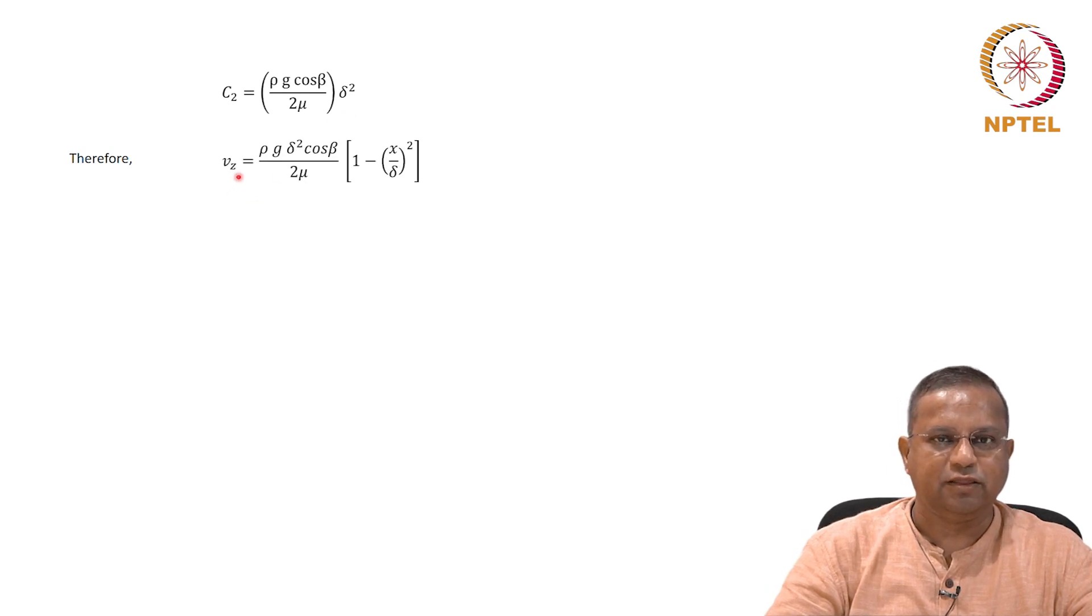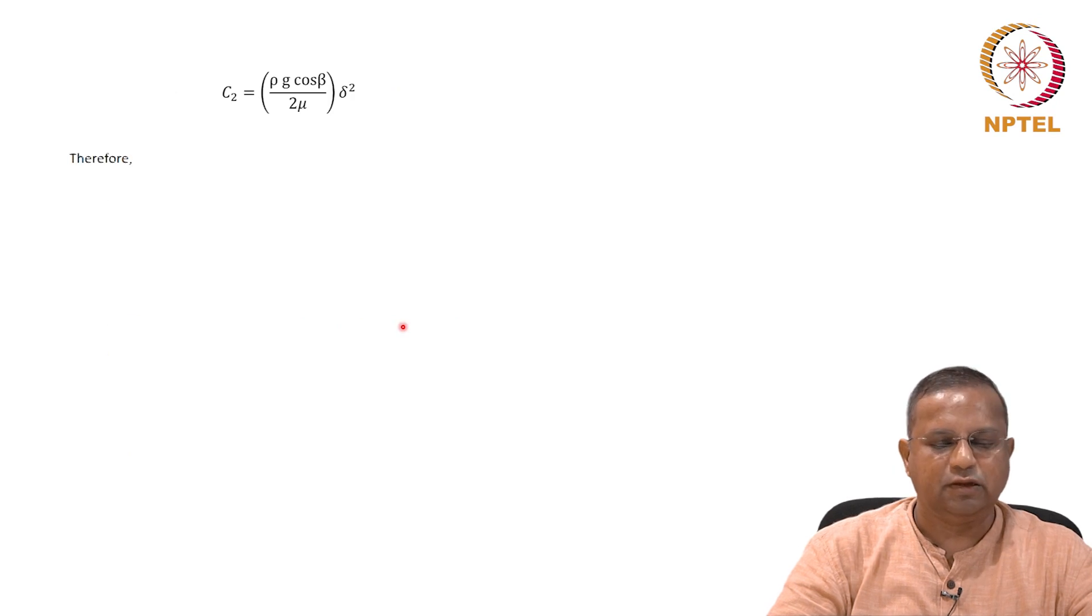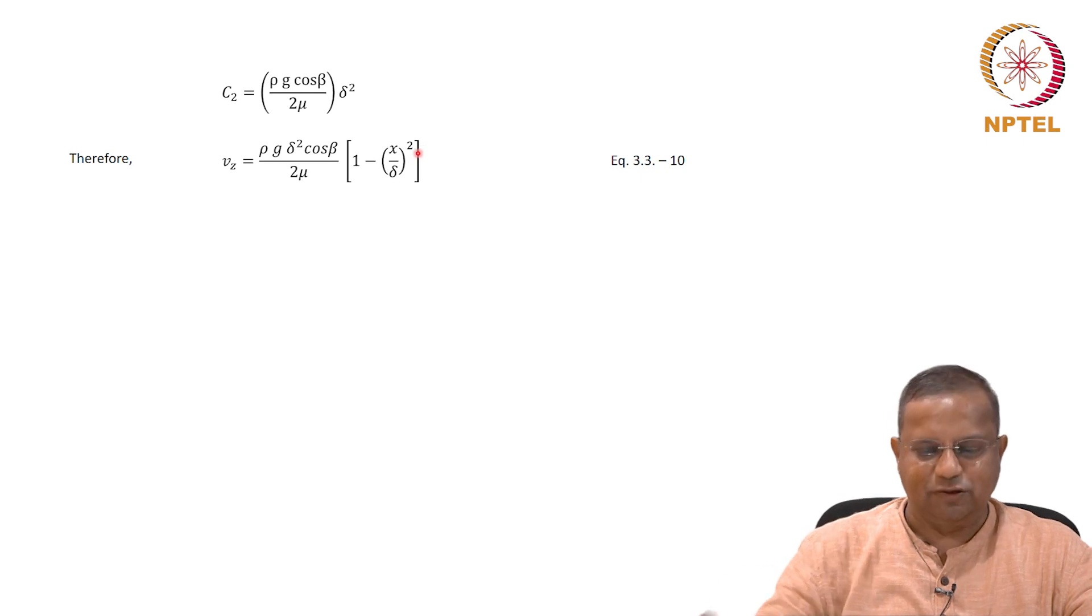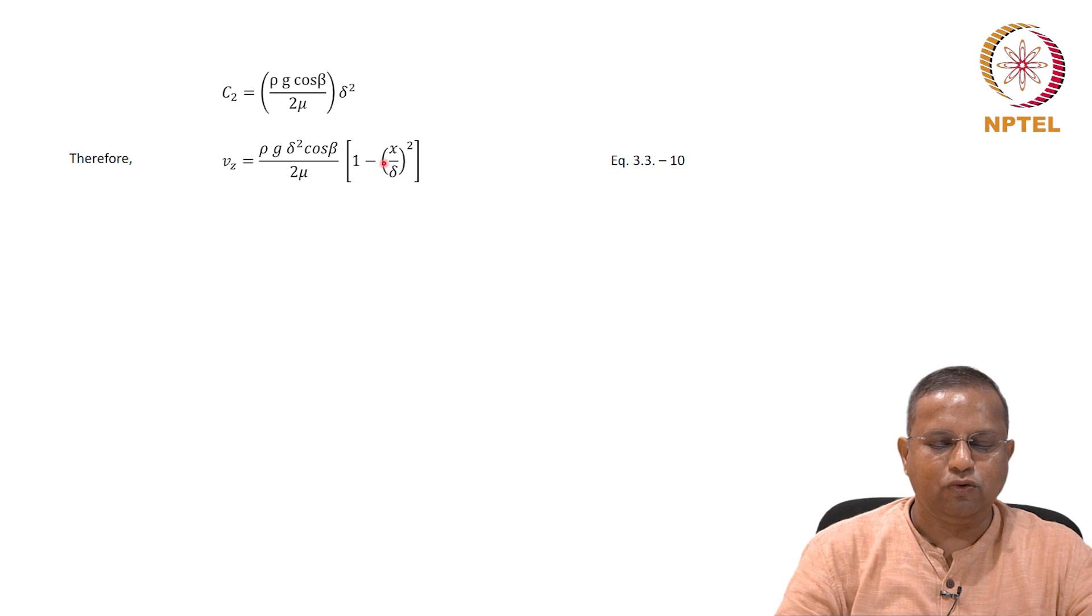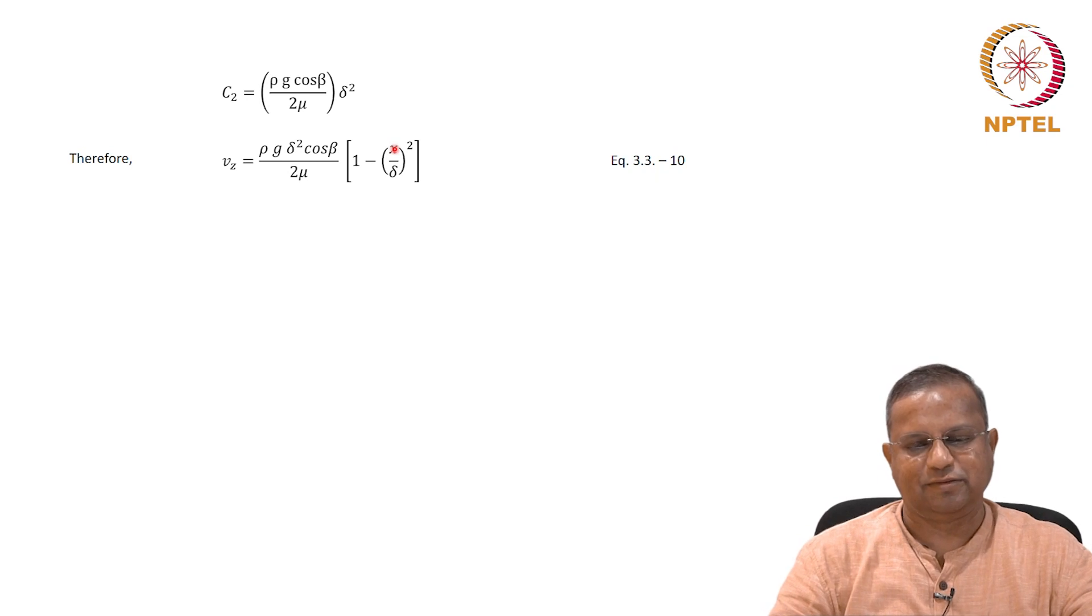Therefore, we have the velocity profile as vz equals rho g delta square cos beta by 2 mu. Substituting c2 and taking out the common terms, we get rho g delta square cos beta by 2 mu times 1 minus x by delta square. We will call this equation 3.3-10. I would like you to stop the video here, pause the video. Go to any graphing software, put in some numbers or functionality, and see how vz varies with x. See how the velocity profile is in that thin layer. It will be interesting when you do that and then come and check this. Pause and go ahead.